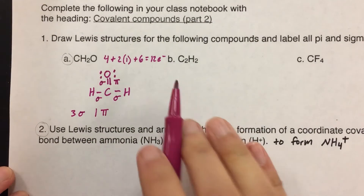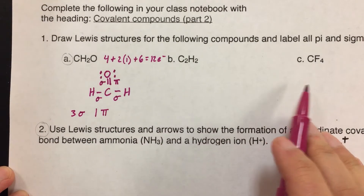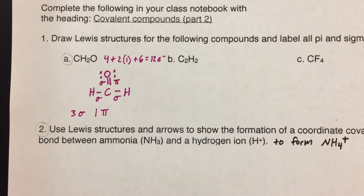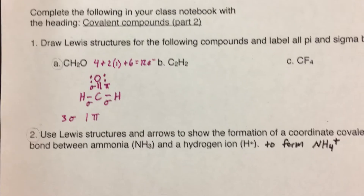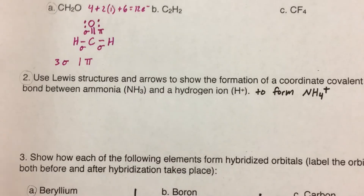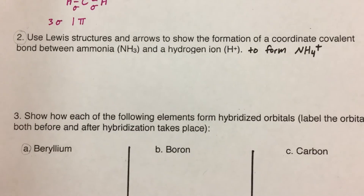You're going to do the same thing for parts B and C. Remember, you need the Lewis structure first, then identify sigma and pi bonds. It's a pretty easy topic. We'll move on to number two, which is about coordinate covalent bonds.